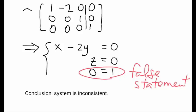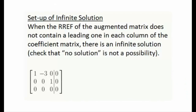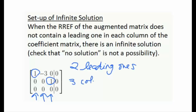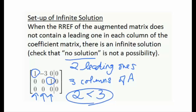Zero equals one is clearly a false statement. When we get a false statement from our reduced row echelon form augmented matrix, our conclusion is that the system is inconsistent — it has no solution. After confirming no solution is not a possibility in a different case, we count the leading ones and compare to the number of columns in the coefficient part of the matrix. If the number of leading ones is less than the number of columns, we have an infinite solution, provided there is no false row.